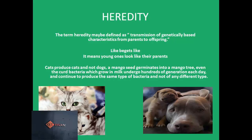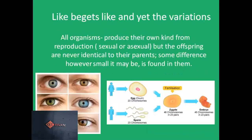A very common phrase, 'like begets like,' serves as the principle of heredity. It simply means that there is a strong similarity between the offspring and their parents. If you take a look at the pictures, we see the young one of a cat resembles its parent; similarly the young one of a dog resembles its parent. But if you pay close attention, I have used the term 'resemble' or 'similar' instead of 'identical' — the young one resembles the parent but is not identical to them. This brings us to the point that although like begets like, yet there are variations.